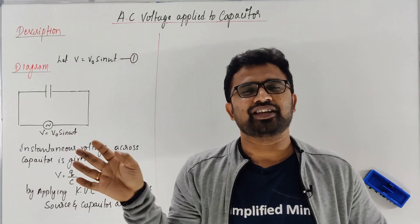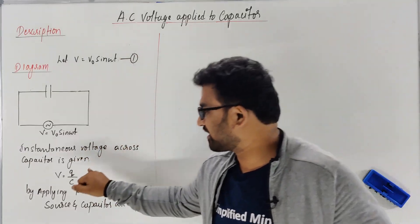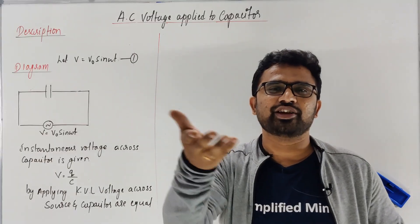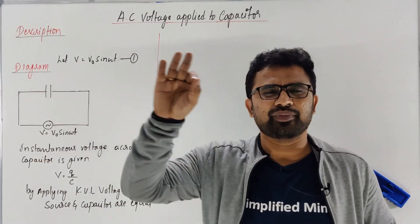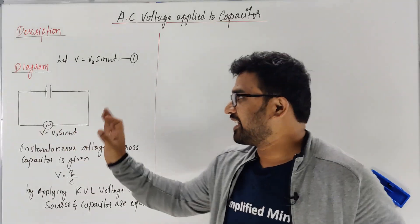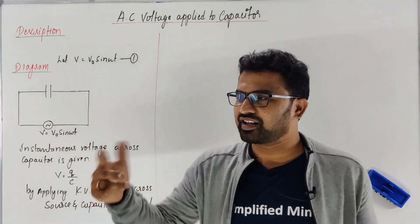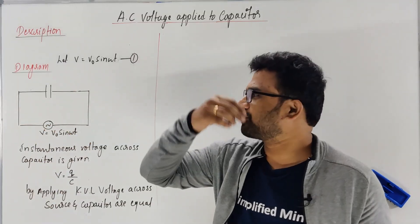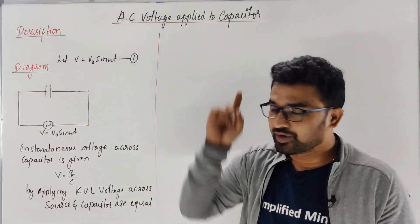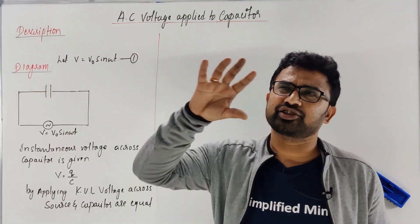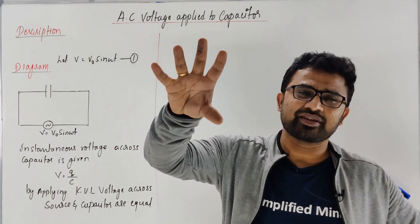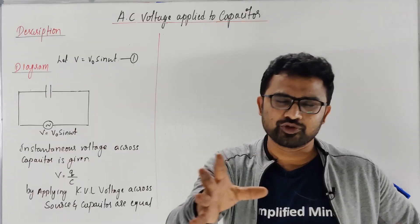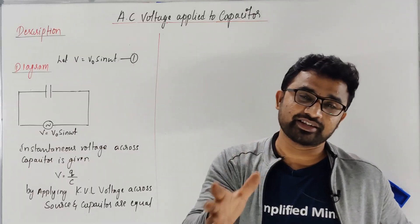We will have integration and differentiation. What is the charge Q? The differentiation of Q is dQ. The same as the previous derivation — this derivation is very easy. Also, we will discuss every chapter in the description box. You can go and check whatever chapter you want. Also, make use of the PDFs on Simplified Minds.